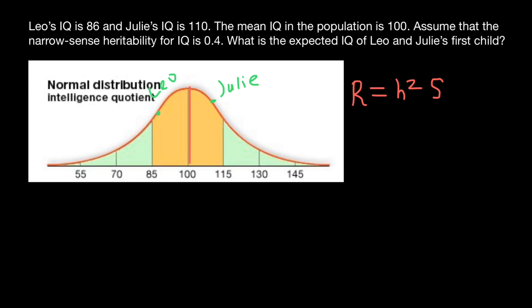Let's do this first step and find the mean of the selected parents. We have 86 plus 110, and we have to divide by two. 86 plus 110 is 196 divided by two. This is going to be mean of the selected parents.